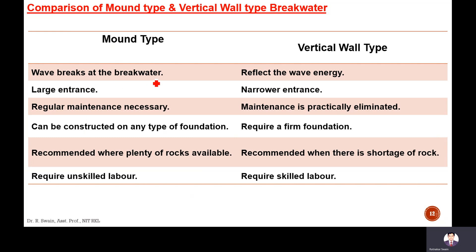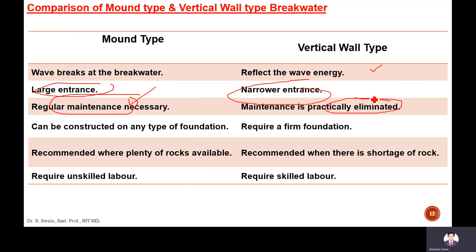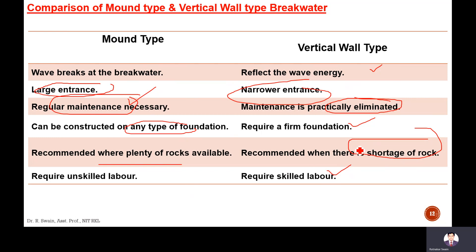In the mole type, the wave breaks at the breakwater wall, reflecting wave energy. The vertical wall type is used in large entrances. The rubble mound type requires regular maintenance because it is made of natural material which is not as strong. The vertical wall type does not require regular maintenance because it is very strong, but the foundation must be strong. The rubble mound type can be constructed on any type of foundation but requires plenty of rocks, while the vertical wall type requires skilled labour. This is similar to the difference between a concrete dam and an earthen dam.